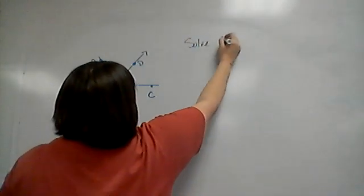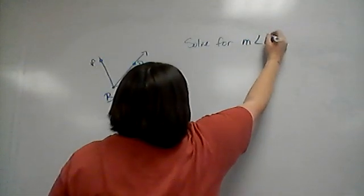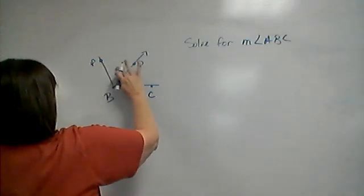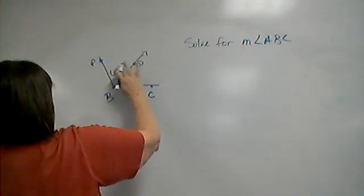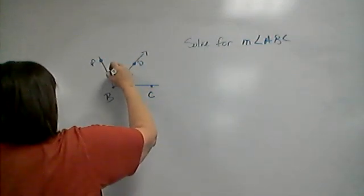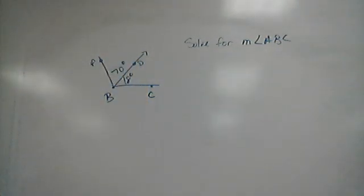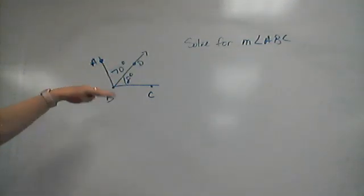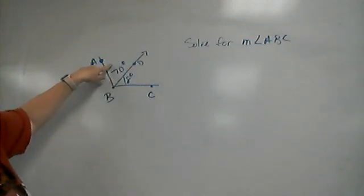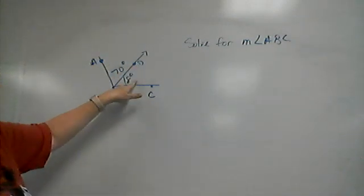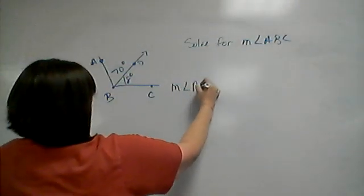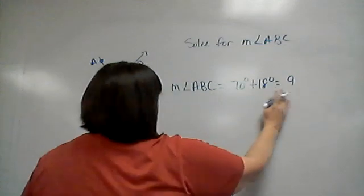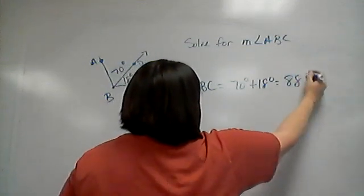We're going to solve for the measure of angle ABC. We're given — and this is not to scale, this is just an example — the measure of ABD is 7 degrees and the measure of DBC is 18 degrees. So the measure of the large angle ABC is 7 degrees plus 18 degrees, which is 88 degrees.